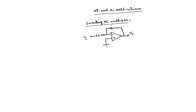The output is V0, input is Vi, this is the capacitance, this is R1, and this is RF. In order to derive the expression for the gain of this AC amplifier, we have to use the S-domain approach. Here, the capacitance will have a capacitive reactance. Xc is given by 1/(ωC) or 1/(2πfC).